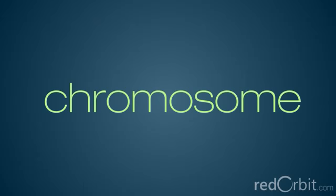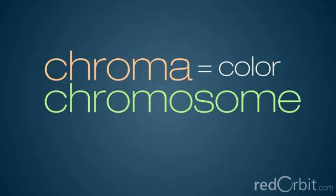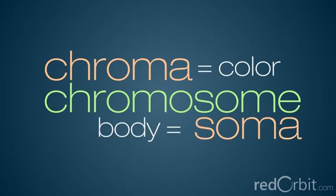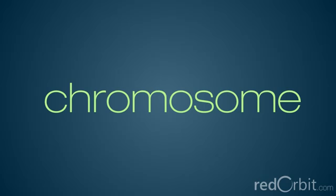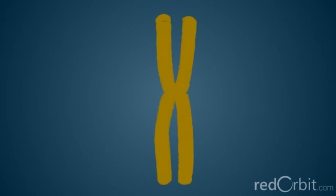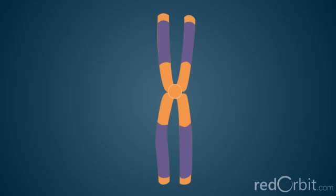The term chromosome comes from the Greek words for color, chroma, and body, soma. Scientists gave this name to chromosomes because they are cell structures, or bodies, that are strongly stained by some colorful dyes used in research.